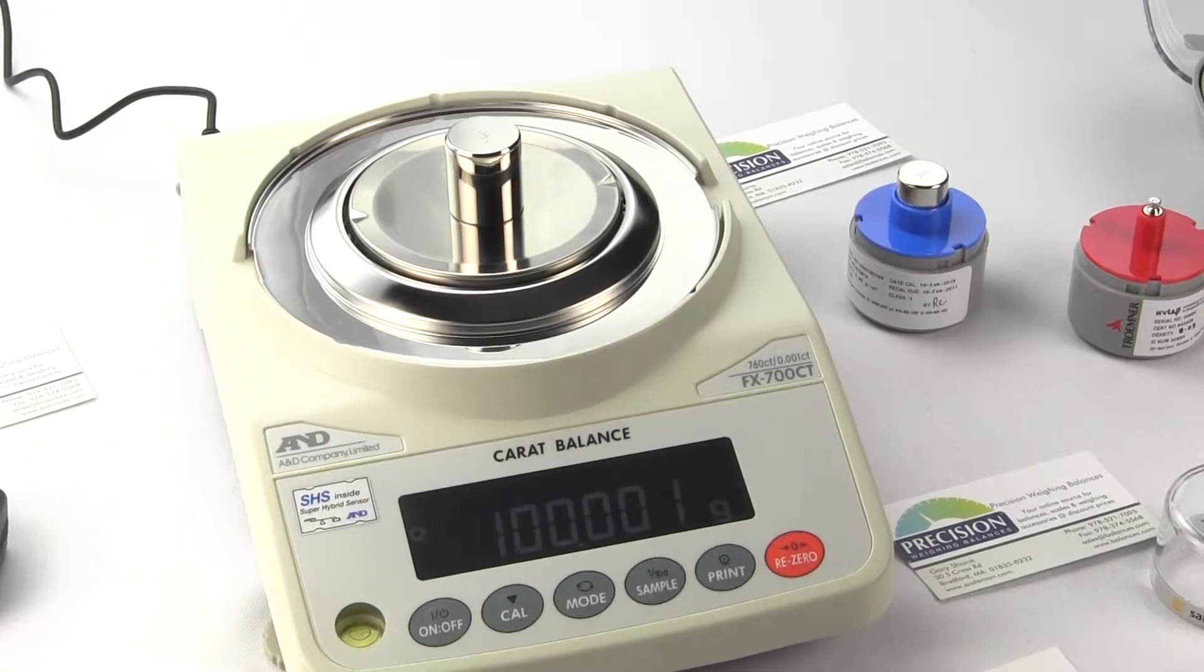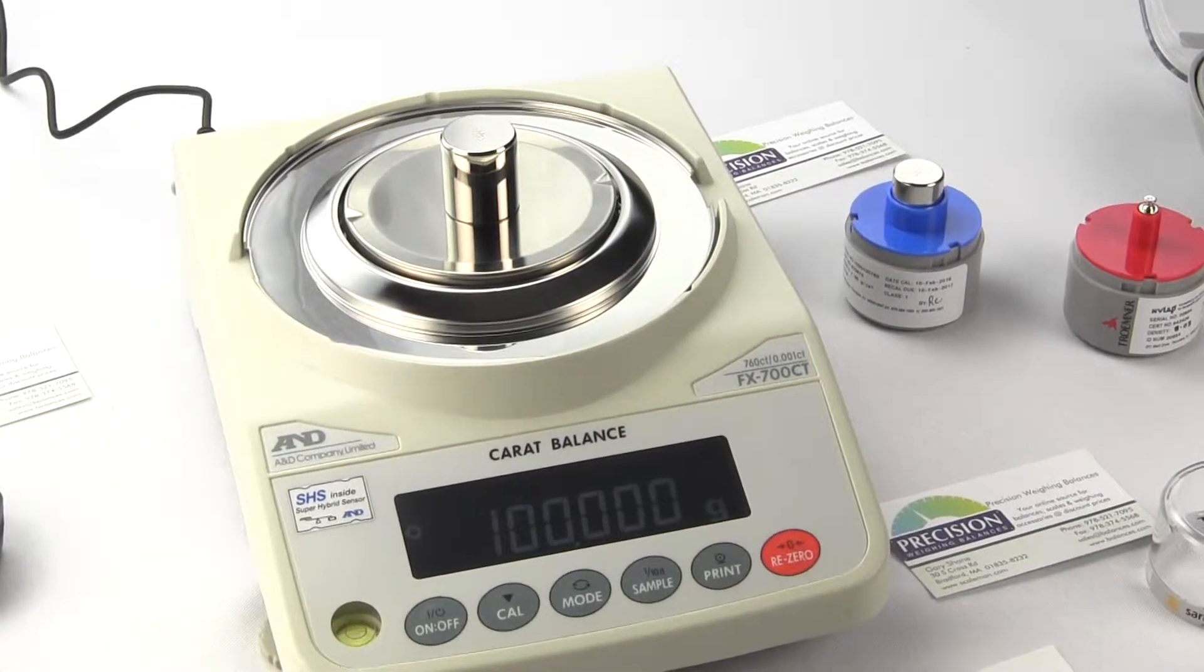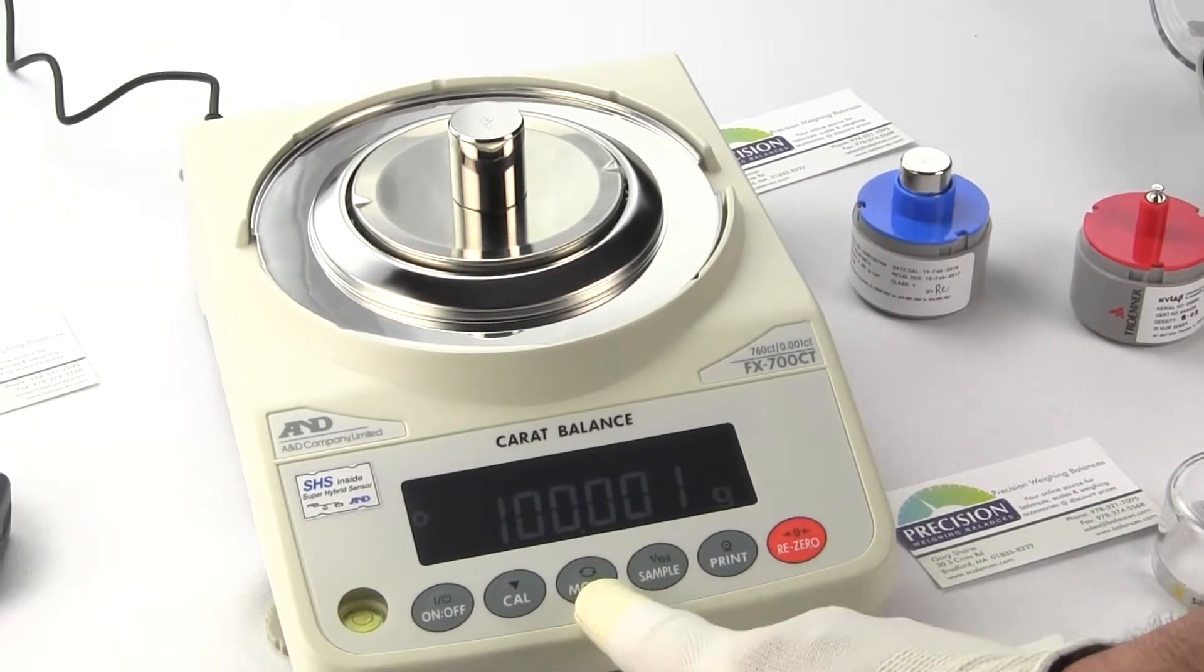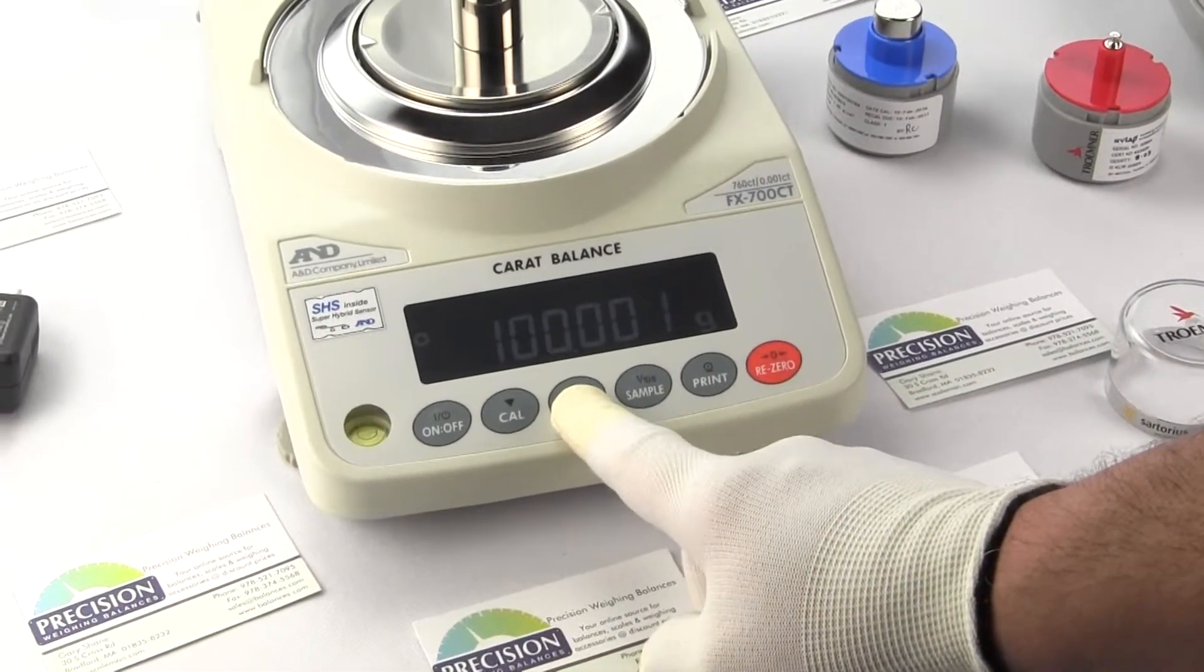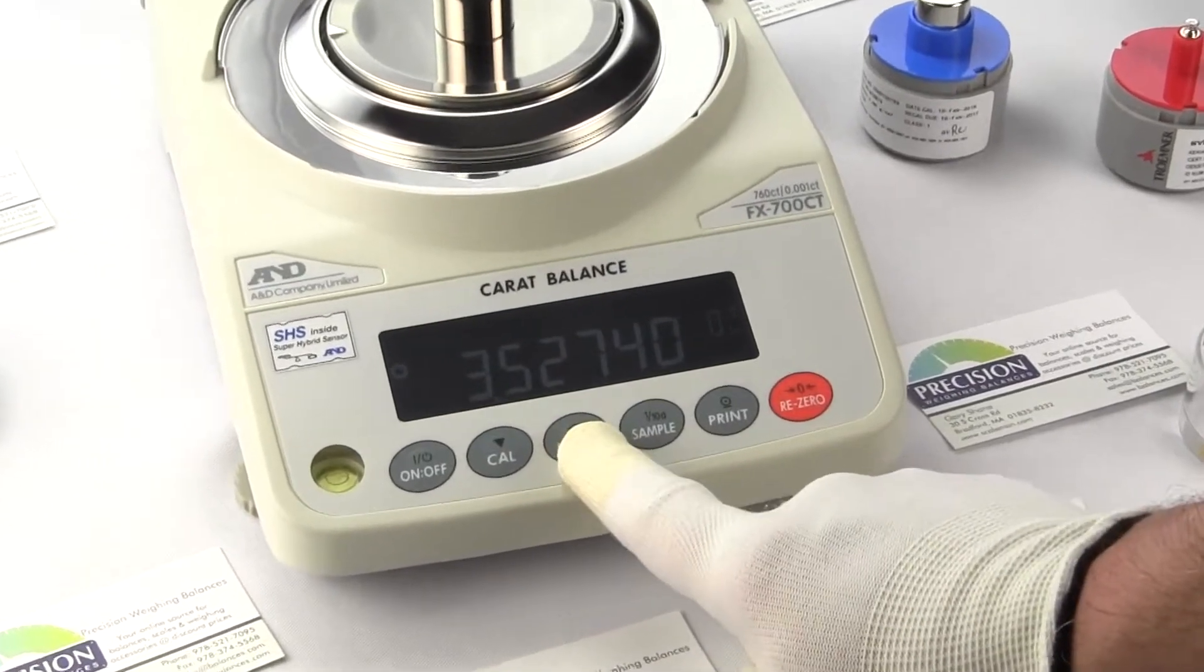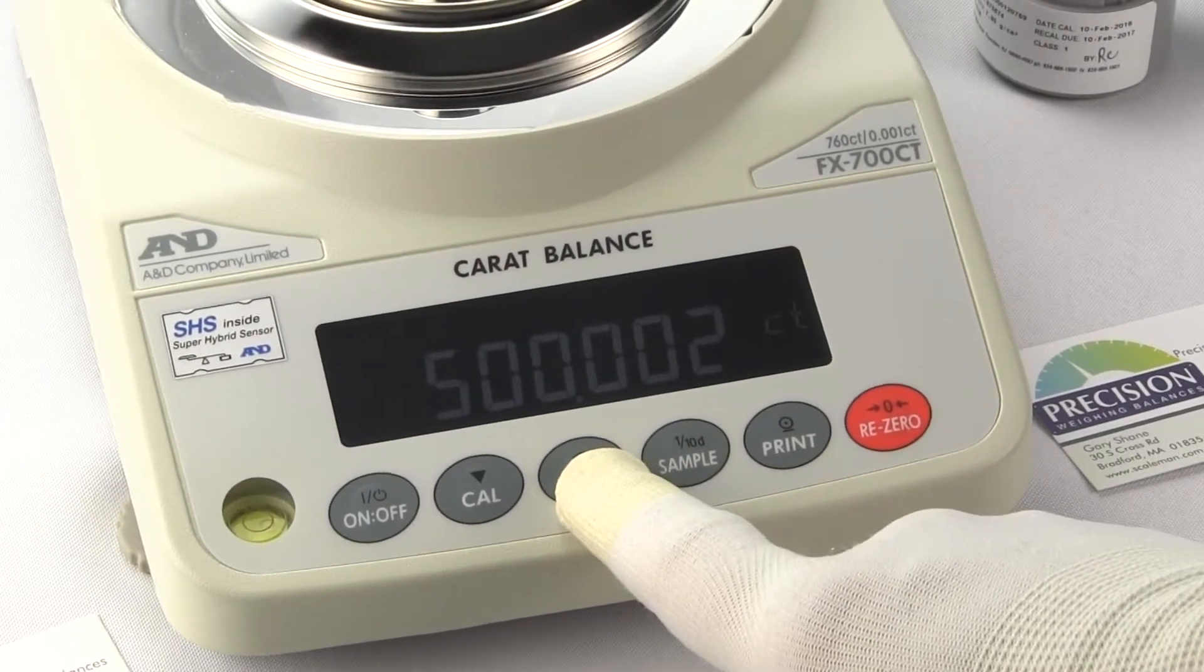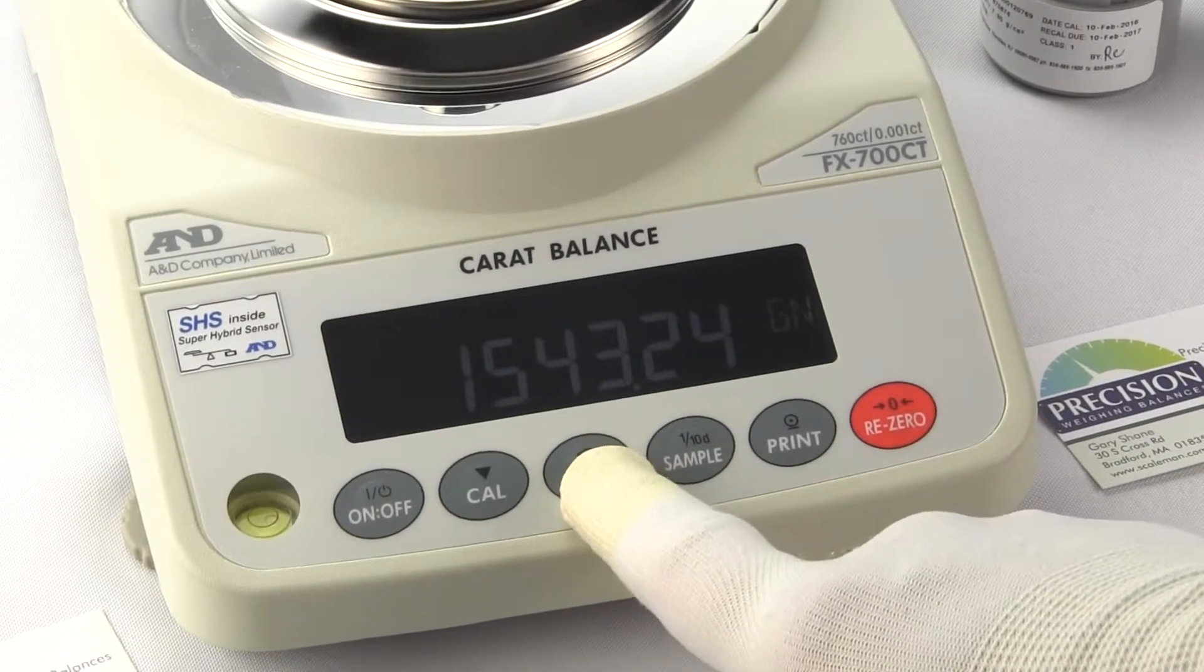The FX700CT out of the box weighs in carats and grams. The balance does feature multiple weigh modes. So if we press the mode button I've configured the balance for multiple units. So we have ounces, pounds, troy ounces, carats, pennyweight, grains.